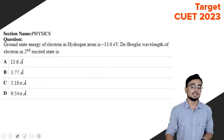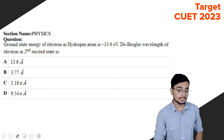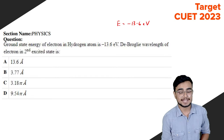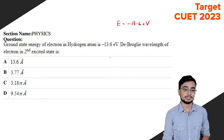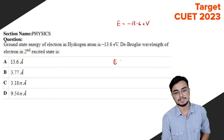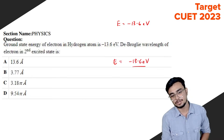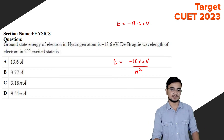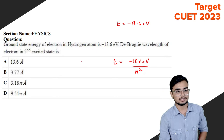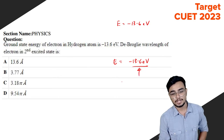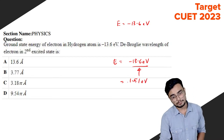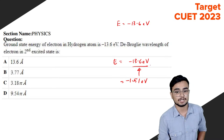The ground state energy of the hydrogen atom is minus 13.6 electron volts. For the second excited state, energy is equal to minus 13.6 eV divided by n squared. Substituting n = 2 for the second excited state gives minus 13.6 divided by 4, which is minus 1.51 electron volts.